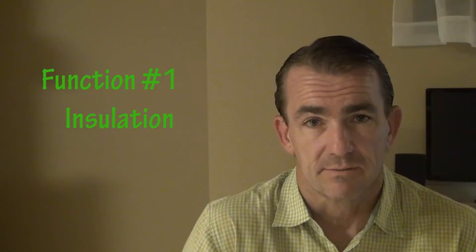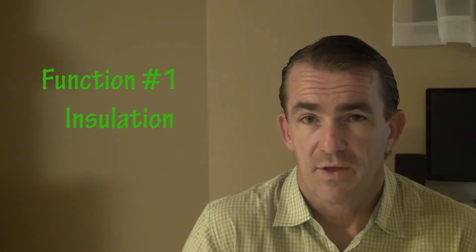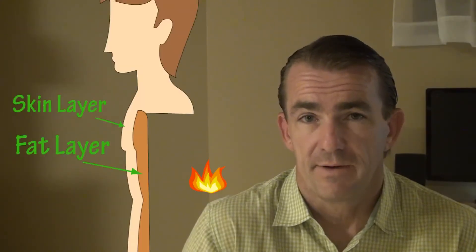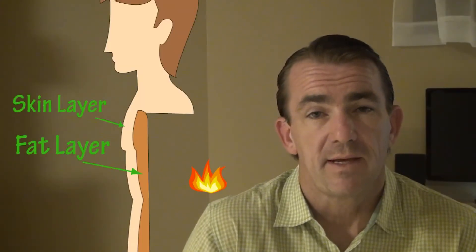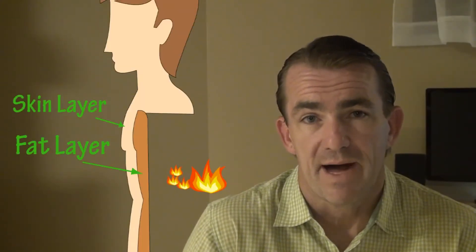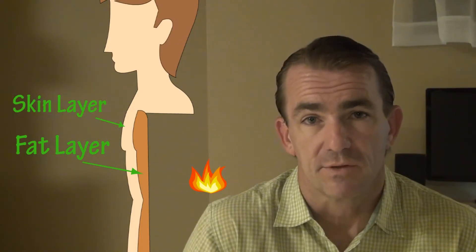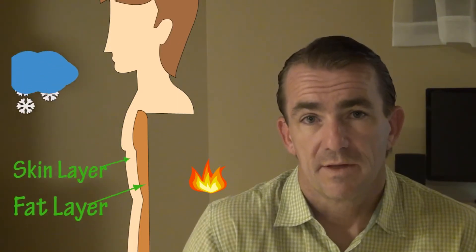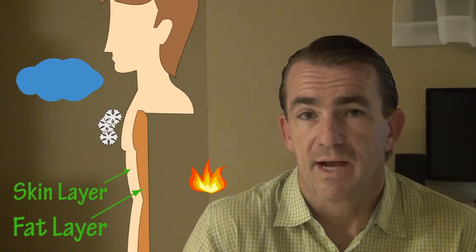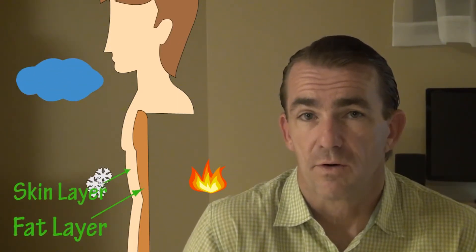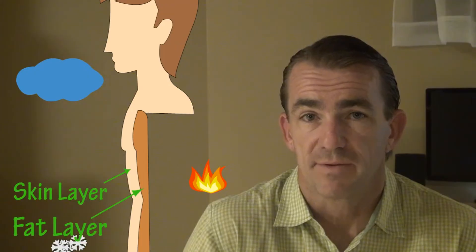The first function of fat is insulation. There is a thin layer of fat underneath the skin that keeps heat inside the body, maintaining proper temperature. This layer also protects the inner core from extreme temperature changes.